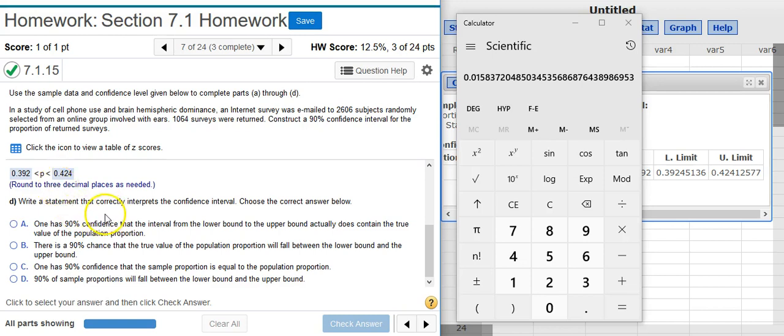So let's look and see which answer option most, you know, best fits that statement. Answer option A says, one has 90% confidence that the interval from the lower bound to the upper bound actually does contain the true value of the population proportion. That sounds a lot like we just went over. So let's mark that.